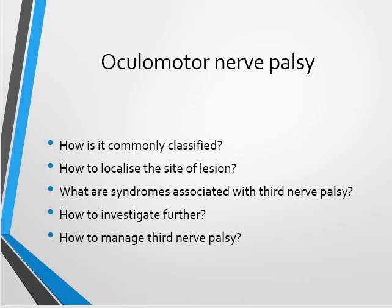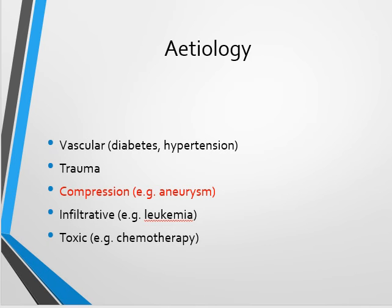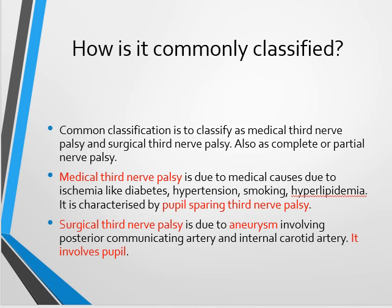Let us look at a few important aspects of oculomotor nerve palsy: how it is classified, how to localize the site of lesion, the syndromes associated with third nerve palsy, and how to investigate and manage it. The common risk factors are vascular causes like diabetes, hypertension, and hyperlipidemia, and importantly compressive lesions such as aneurysm of the posterior communicating artery, apart from trauma and inflammatory causes.